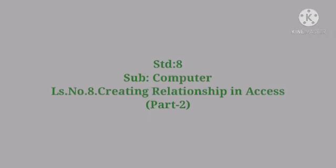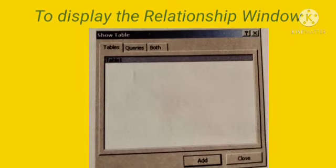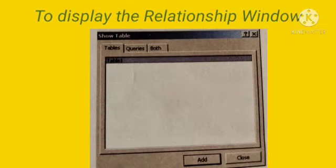Standard 8, subject Computer. Today we are going to learn Lesson Number 8: Creating Relationships in Access, Part 2. To display the Relationships window, click on the Database Tools tab. In the Show Hide group, you have to select the Relationships option.